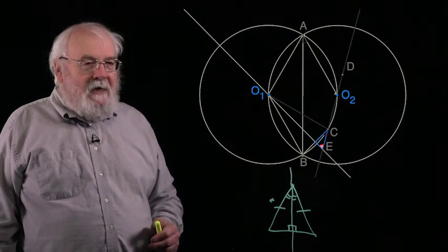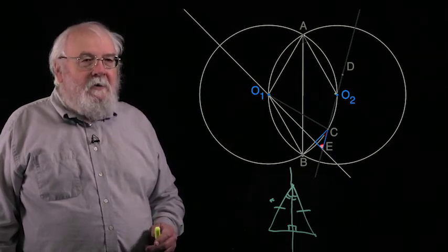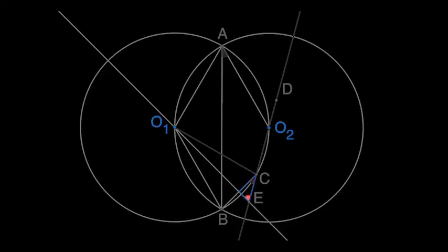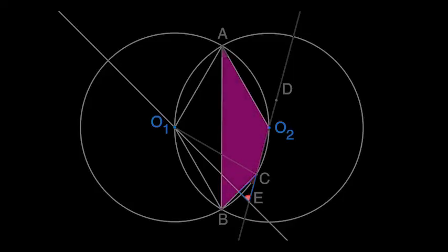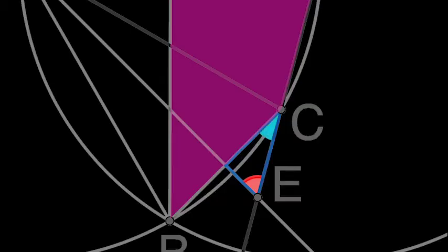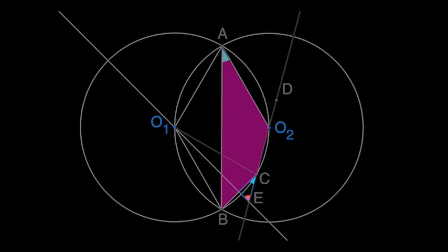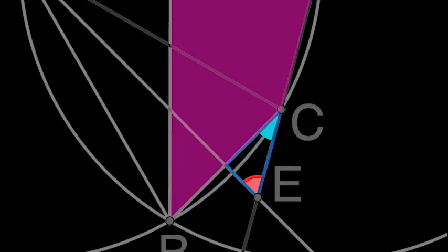But this time, we don't use angles in the same segment. This time, we consider the cyclic quadrilateral A, B, C, O2. Now, the little blue angle that we're focusing upon is an external angle of this cyclic quadrilateral. And so it's equal to the interior opposite angle, the angle O2AB. And at the outset, we decided that was 30 degrees. So it's fine. In this triangle that we're studying, we've got a right angle and 30 degrees, so the other angle must be 60. So what have we got now? We're nearly there.